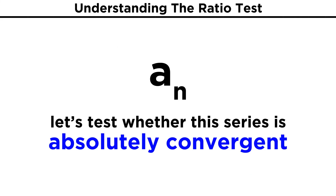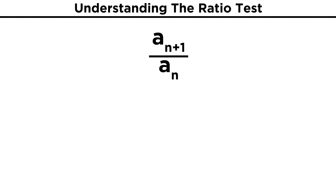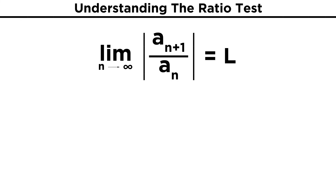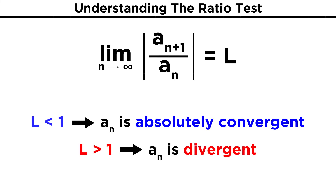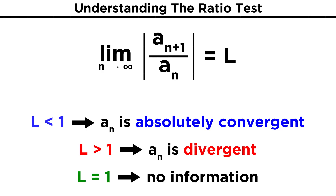There is a test that is helpful in determining whether a series is absolutely convergent, and it is called the ratio test. We can place A sub n plus one over A sub n to form a ratio, and take the absolute value. Then we take the limit of this ratio as n approaches infinity. This limit will equal L. If L is less than one, then the series A sub n is absolutely convergent. If L is greater than one, the series is divergent. And if the limit equals one, the ratio test is not useful and it can't tell us any information about the series.